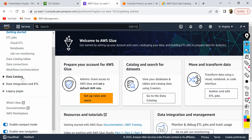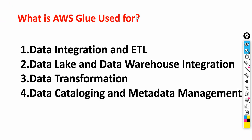So those are the two important aspects of Glue: data catalog and ETL. Now looking at the major use cases, the first one is data integration and ETL — if you need to build an ETL pipeline, take your data from a source, transform it, and load it to a target, you can use AWS Glue. There are Glue jobs which you can create, and we'll talk about those in depth in the next video.